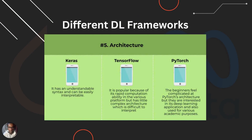Next is architecture. Keras has understandable syntax and can be easily interpreted. TensorFlow is popular because of its rapid computation ability across various platforms, but it has a little more complex architecture, which is difficult to interpret. For beginners, PyTorch's architecture might seem a bit complex because it uses object-oriented programming, which is not used when experimenting with Keras and TensorFlow. But for those interested in deep learning applications and for academic purposes, PyTorch is being preferred nowadays.